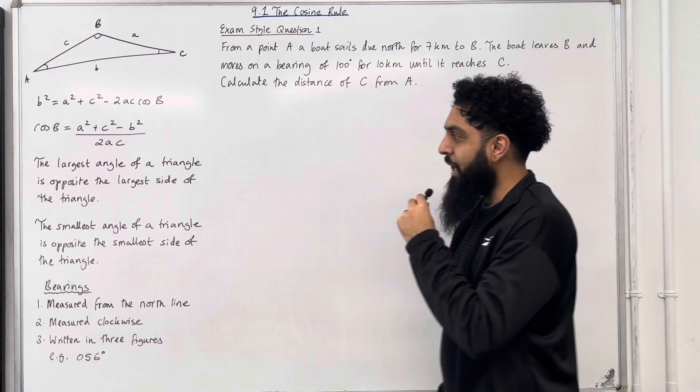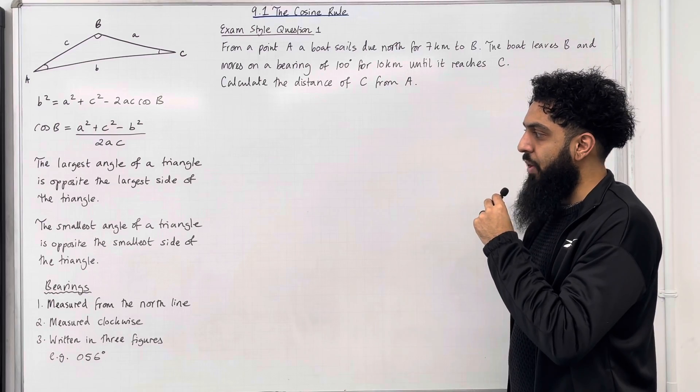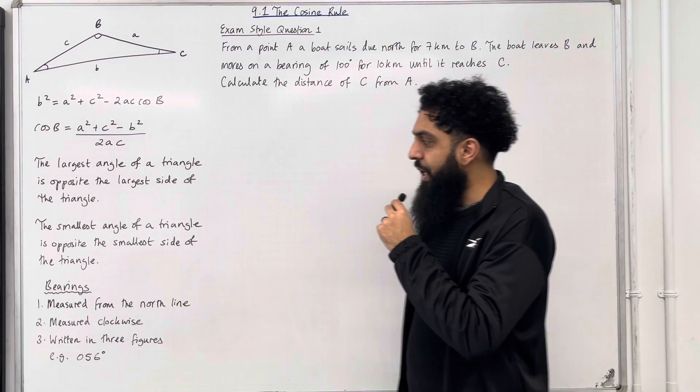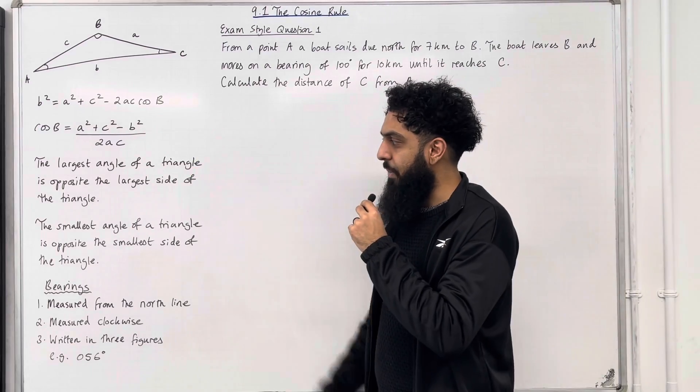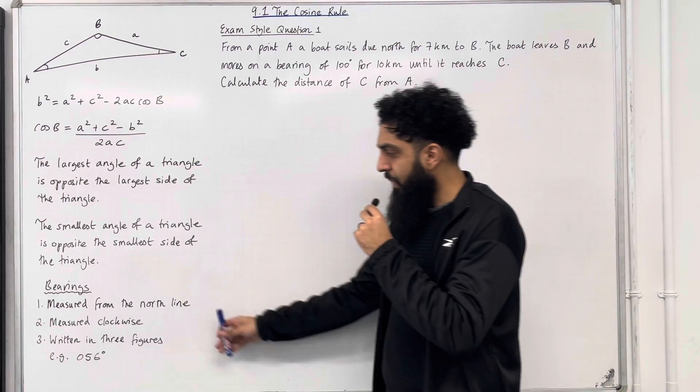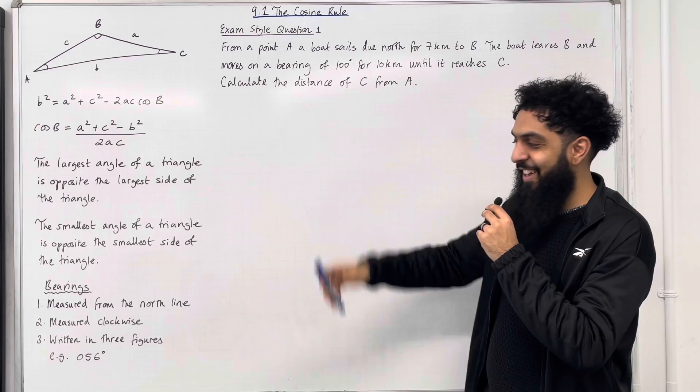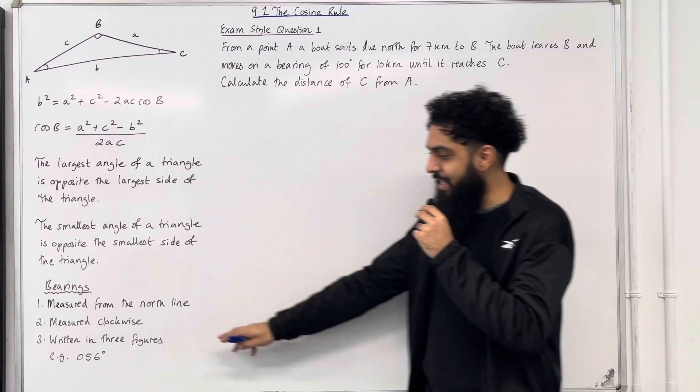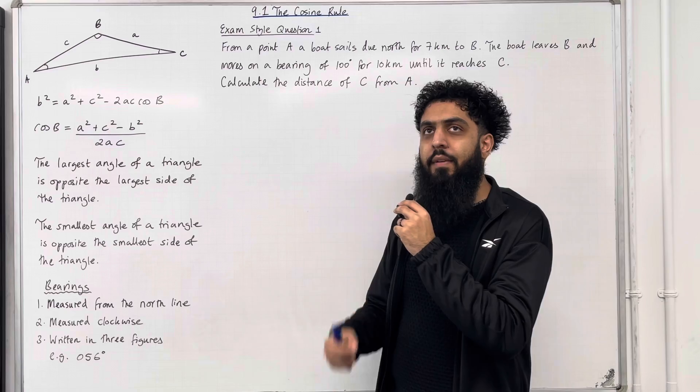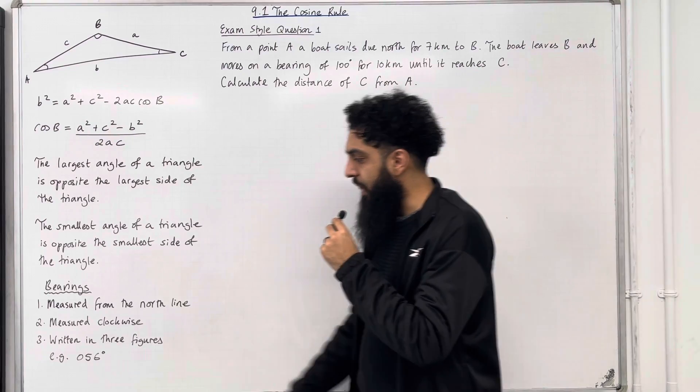The largest angle of a triangle is opposite the largest side of the triangle. The smallest angle of a triangle is opposite the smallest side of the triangle. These are two key facts about triangles. Bearings: number 1, measured from the north line; number 2, measured clockwise; number 3, written in three figures, for example, 56 degrees as a bearing would be 056.